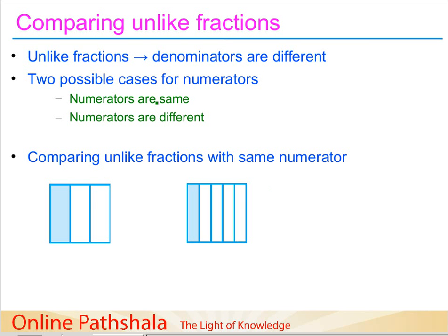Let us continue our discussion on comparing fractions. In this video we are going to consider unlike fractions in which the denominators are different. When the denominators are different there could be two possible cases for the numerators: the numerators could be the same, or the numerators could be different. We will be considering both of these cases when comparing unlike fractions.